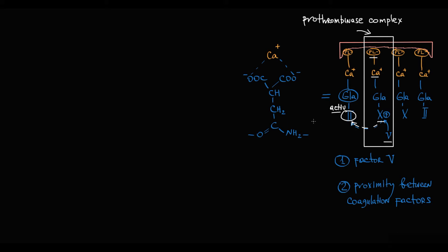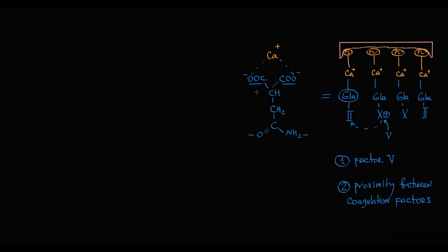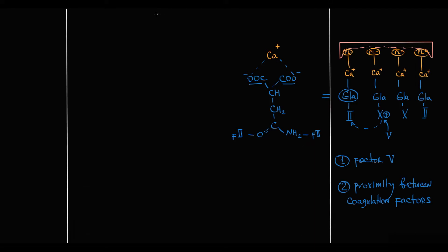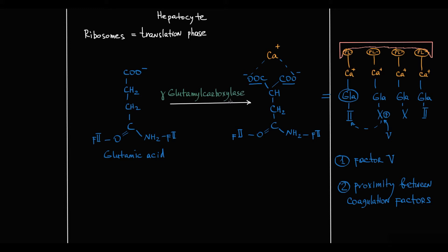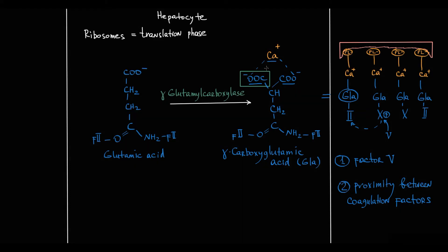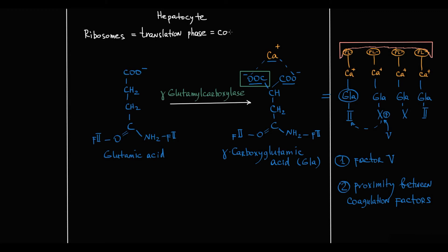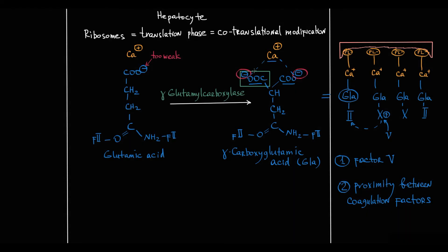The problem is that these carboxy groups on coagulation factors have to be formed. Take prothrombin as an example: prothrombin is produced by hepatocytes. When hepatocytes make prothrombin on ribosomes during the translation phase, one of the amino acids in prothrombin's structure called glutamic acid is modified by a specific enzyme called gamma-glutamyl carboxylase. The function of this enzyme is to add an additional carboxy group to form gamma-carboxyglutamic acid, which allows this protein to bind calcium. Because this carboxylation occurs during the translation phase, this process is called cotranslational modification. Calcium is positively charged and carboxy groups are negatively charged, but the negative charge of just one carboxy group is weak and simply not enough to bind calcium. By adding an additional negatively charged carboxy group, the affinity of prothrombin for calcium ions is markedly increased.